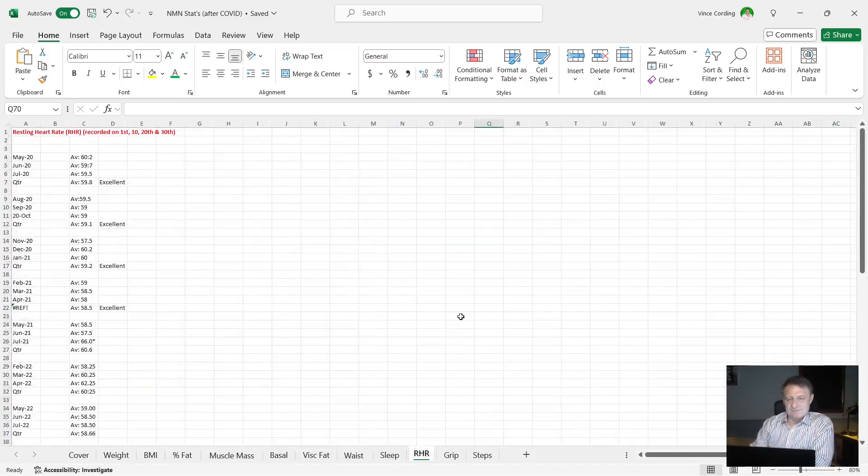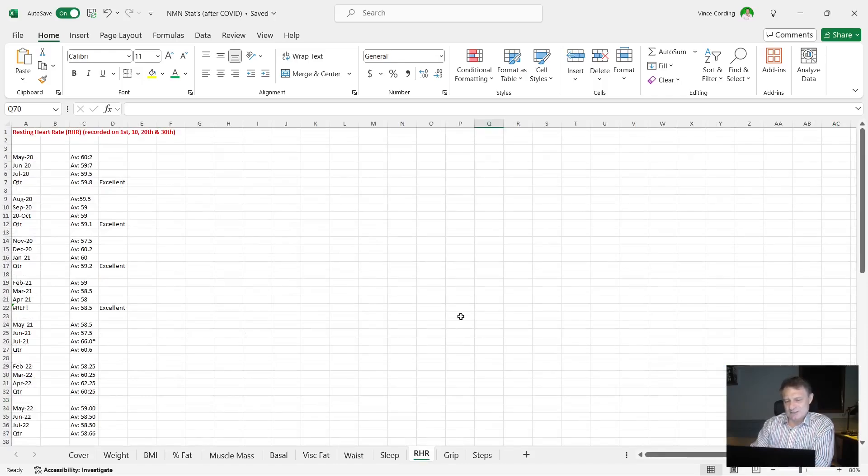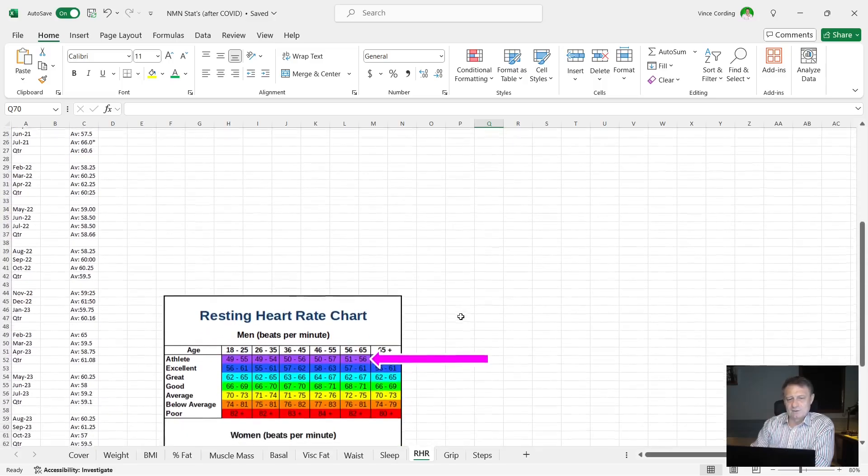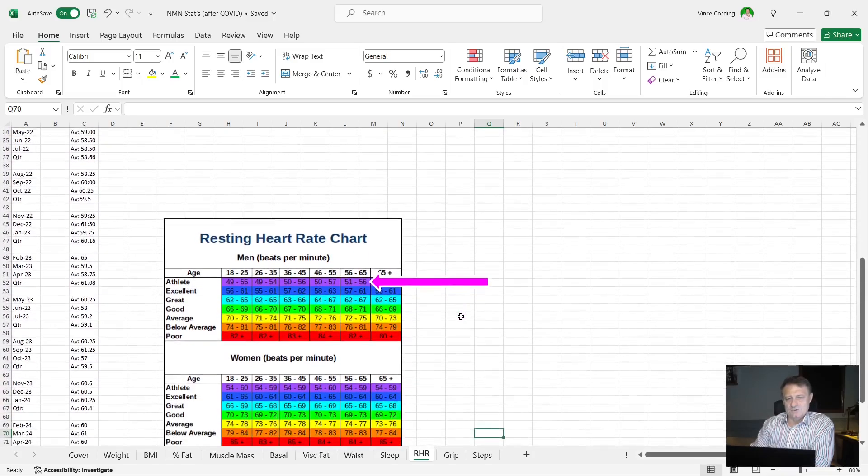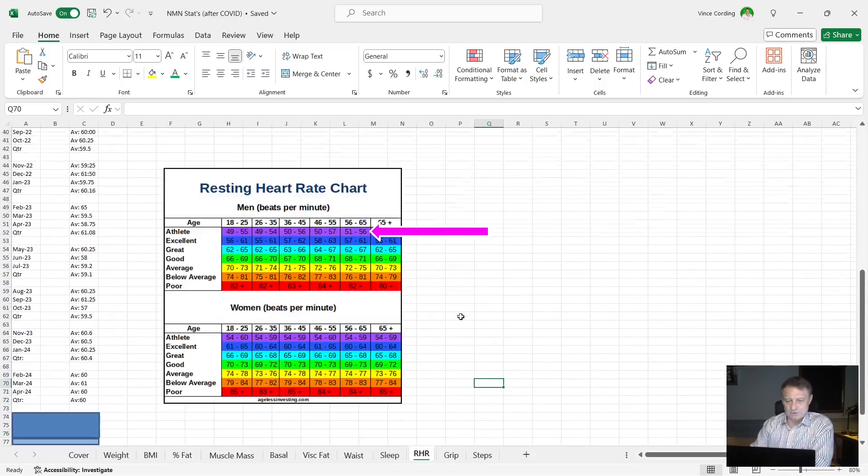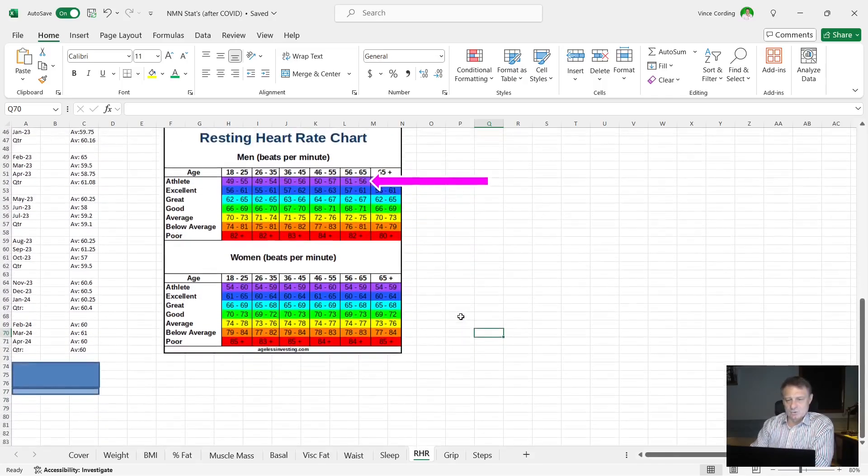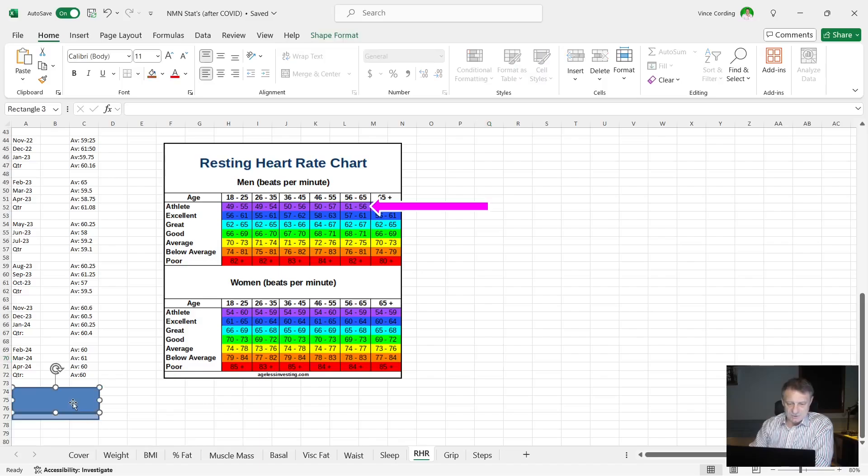Moving on to my resting heart rate. You can see here the scores from May 2020 to July 2022. I'll scroll down now until you've got August 2022 until April 2024. And then the last quarter, you can see here my resting heart rate. The average is 51 in May. In June it was 53, and in July it was 55.